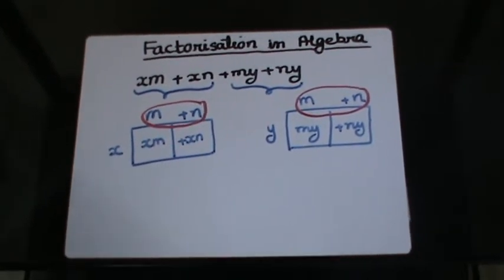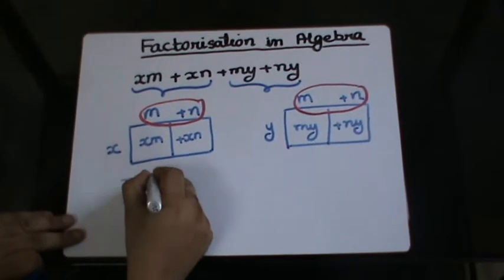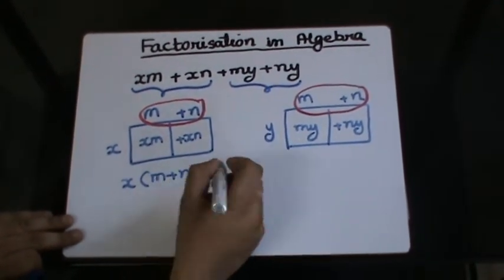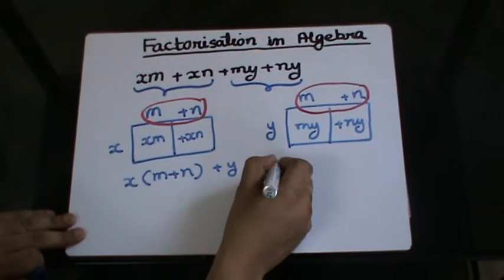So I have now x into m plus n plus y times m plus n.